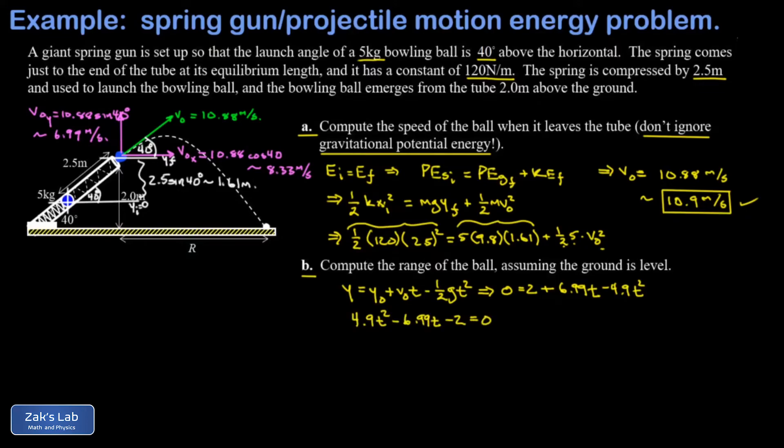You can either plug this into a piece of technology, or we can go ahead and apply the quadratic formula. I'll go ahead and show the long way. So t is going to be negative b plus or minus the square root of b squared minus 4 times a times c. There's a double negative in there to be careful with, and then divided by 2a, which is 9.8.